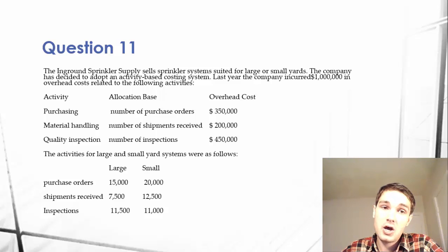Last year the company incurred $1 million in overhead costs related to the following activities: Purchasing, allocated based on the number of purchase orders, $350,000. Material handling, allocation base is number of shipments received, $200,000. Quality inspection, based on number of inspections, $450,000 in overhead costs.